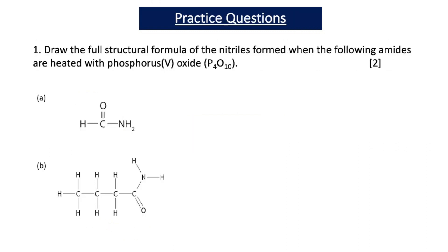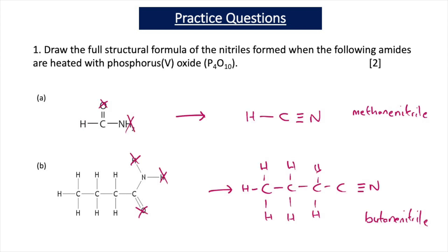Let's test your understanding with some practice questions. The first question asks you to draw the full structural formula of the nitriles formed when the following amides are heated with phosphorus pentoxide (P4O10). The first amide is methanamide.